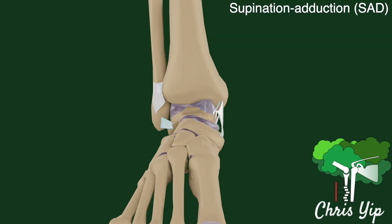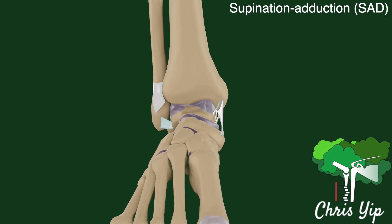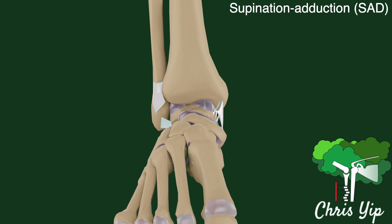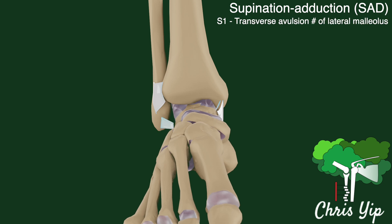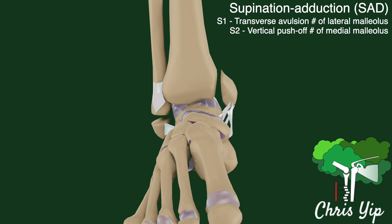The first category of injuries are supination adduction injuries, indicating that the foot starts in a supinated position with a lateral adduction force applied. In the first stage, there is tension in the anterior talofibular ligament, which will pull on the distal fibula, leading to a transverse avulsion fracture that occurs distal to the tibial plafond. As the foot continues to adduct, it will also hit the medial malleolus, causing a vertical push-off fracture.